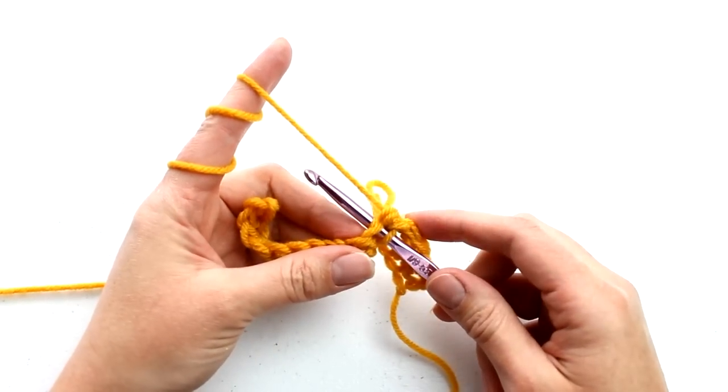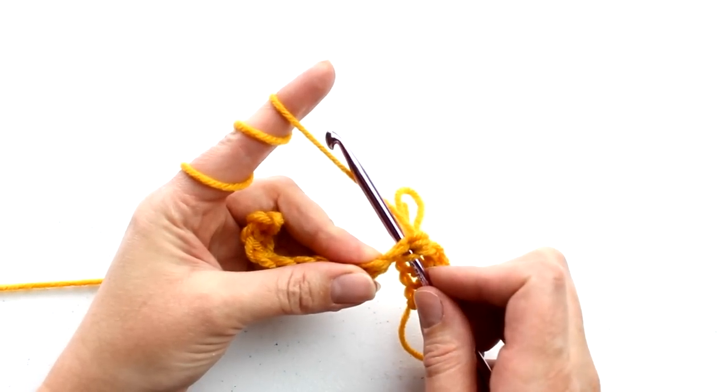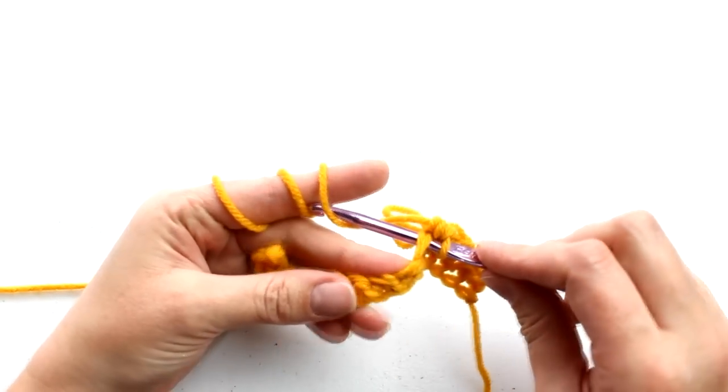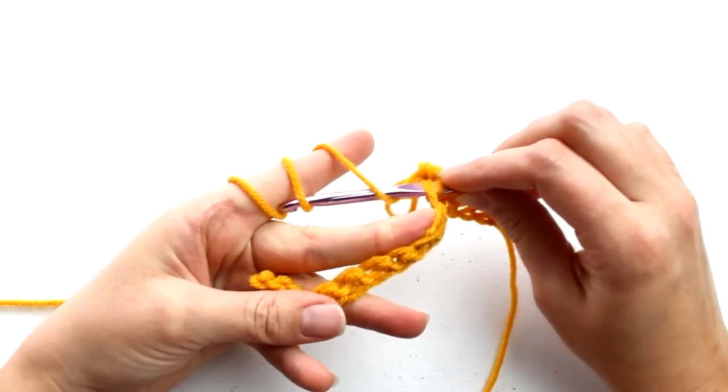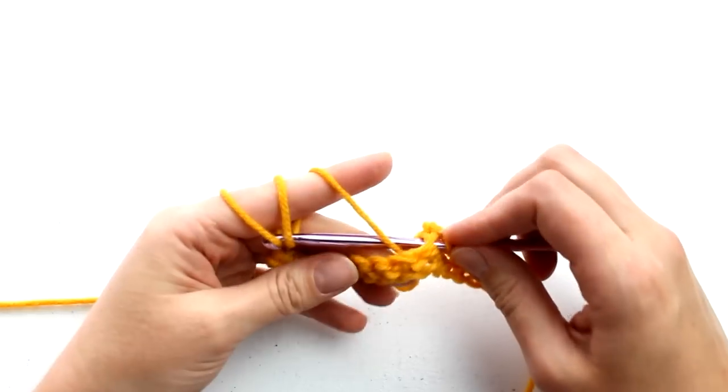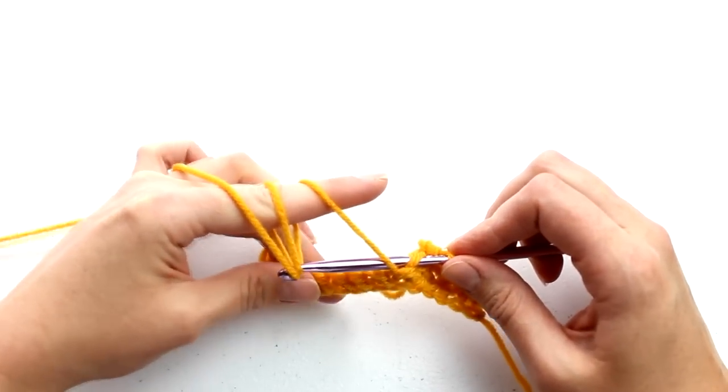And then yarn over the hook from the top of the yarn. Insert your hook into the two and a half loops on your finger. And then this is when you want to pull the yarn in to make your loops smaller, or out to make them longer.